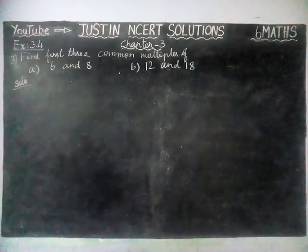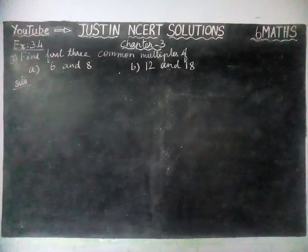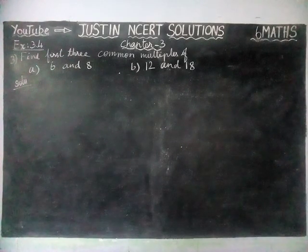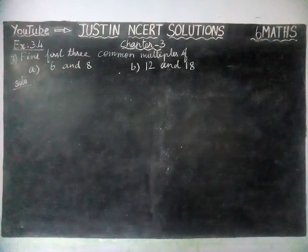Here, find the first 3 common multiples of: part A — 6 and 8, and part B — 12 and 18.